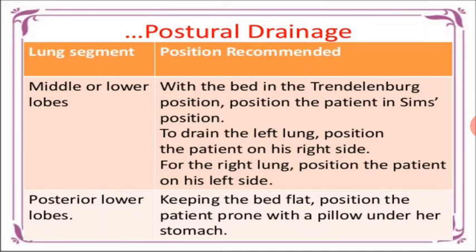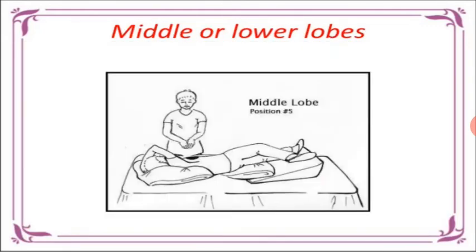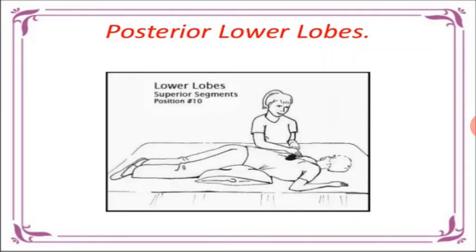To drain the left lung, position the patient on the right side; for the right lung, position the patient on the left side। For the posterior lower lobe, keep the bed flat and position the patient prone with a pillow under the stomach। For the middle lobe position and posterior lower lobe, use a pillow under the abdomen।